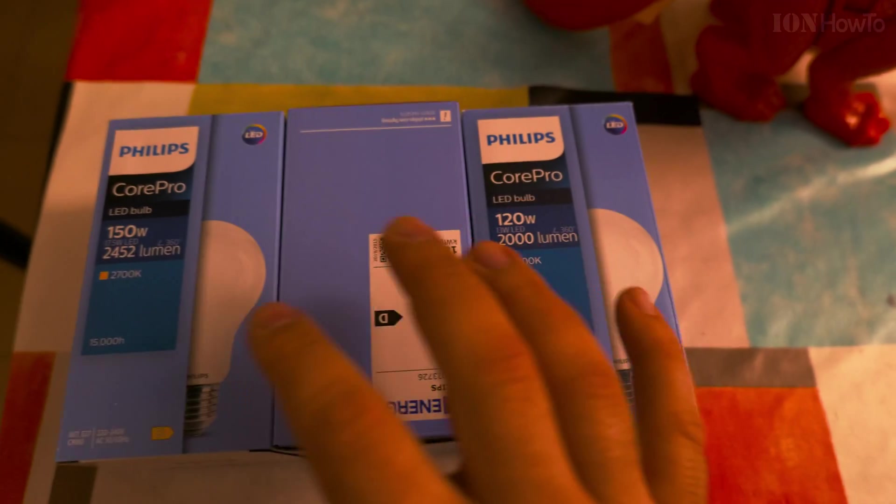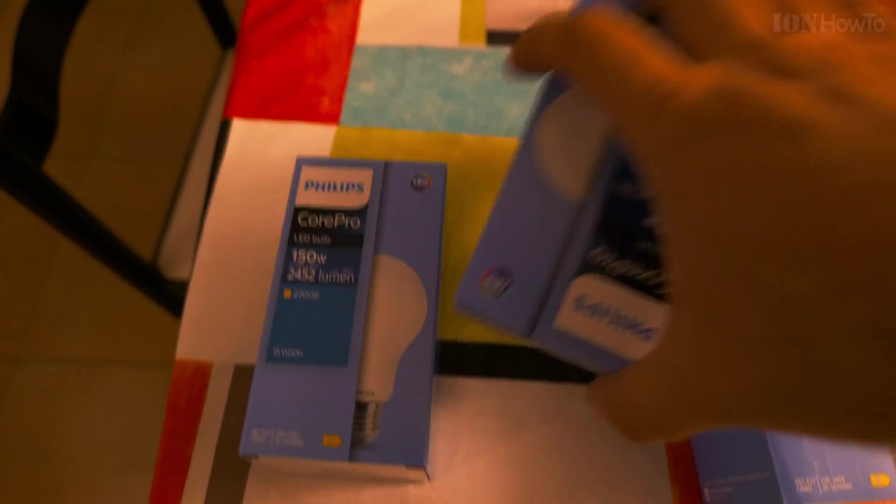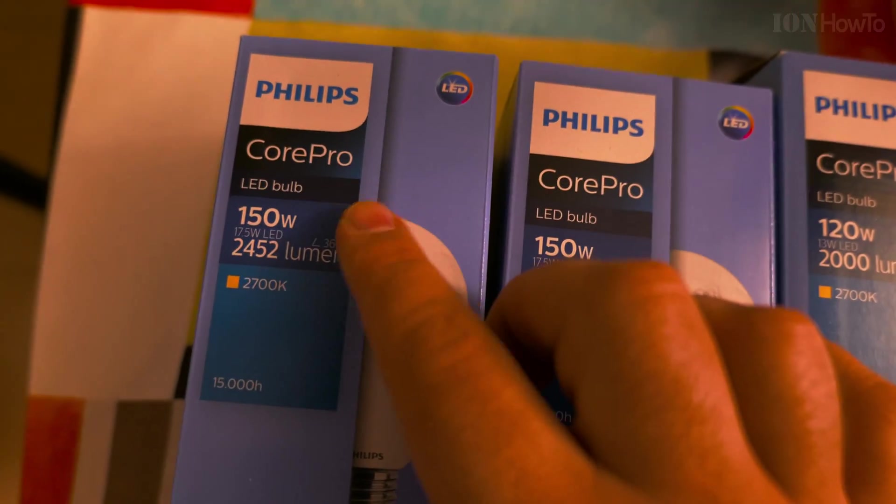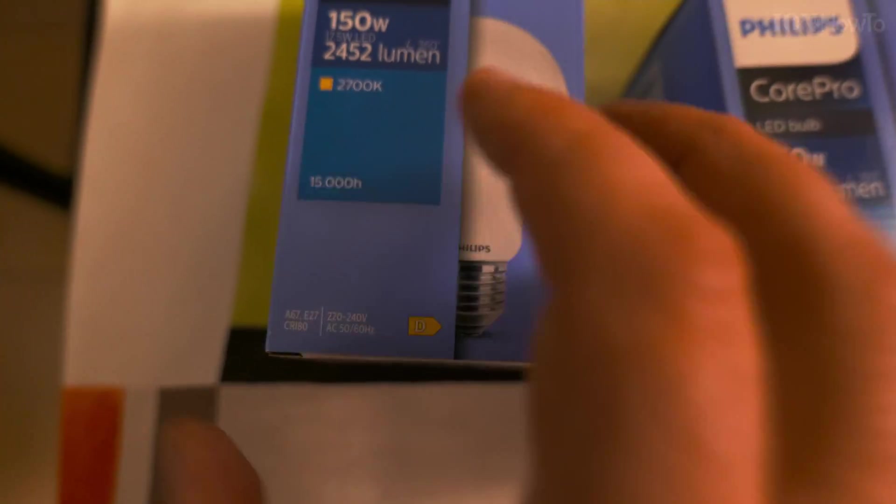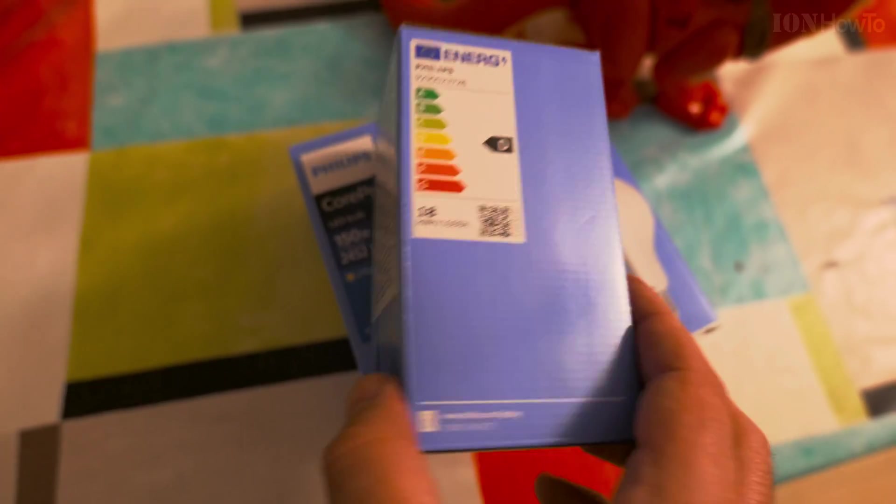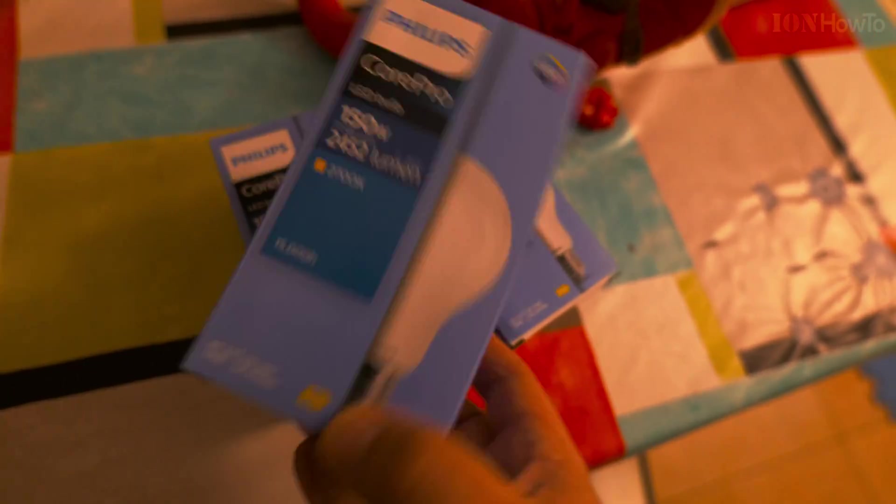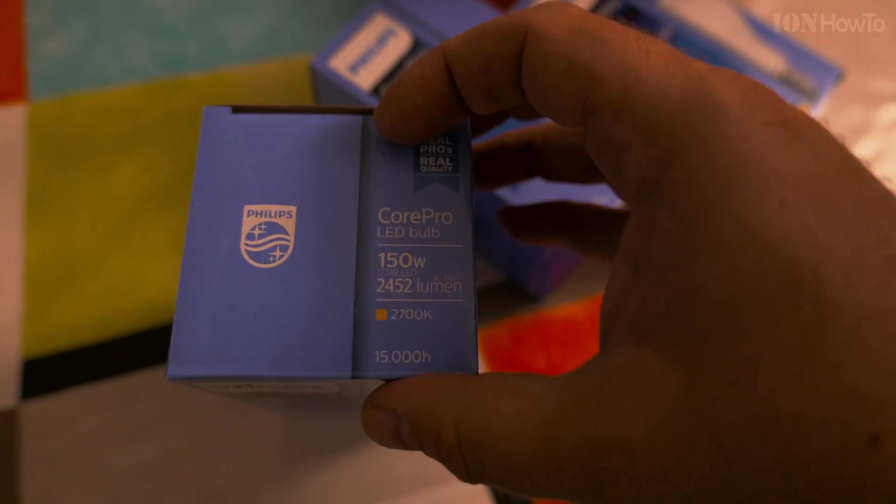Okay, good. For the price of that one plus 10 euros, plus 9 euros, I got three Core Pro, less efficient. 2700K kelvin. Let's see if this is good enough.